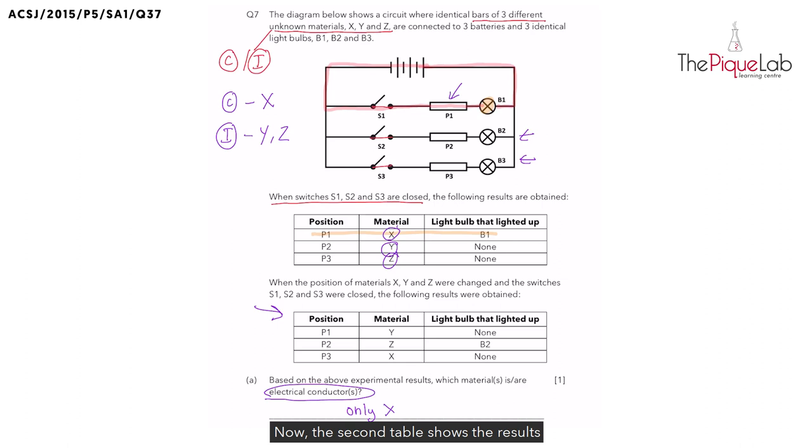Now the second table shows the results when the three materials were rearranged into new positions. So we have to look at which bulbs lit up again to confirm our conclusions from the first table. I'm going to erase my working here from the first table so that we can work on our second table.